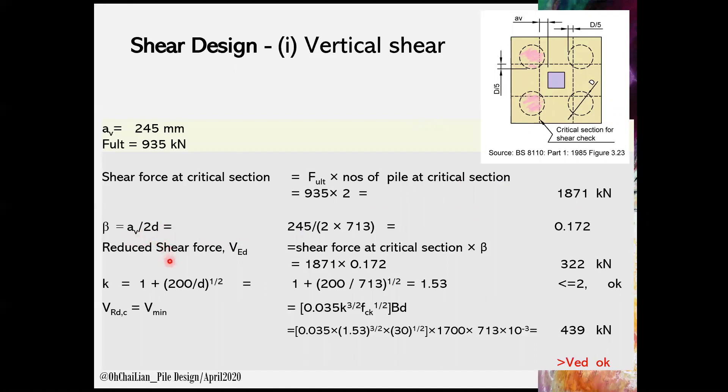A reduced shear force, VED, can be obtained by multiplying the shear force at critical section with beta. The VED is to check against and lesser than the shear resistance in concrete. Shear resistance of the concrete, VRDc, is based on the minimum shear, V minimum, using the equation shown.